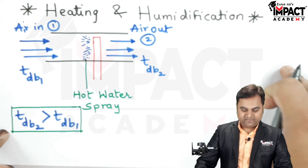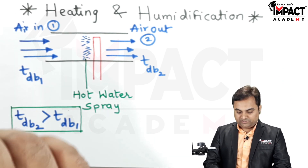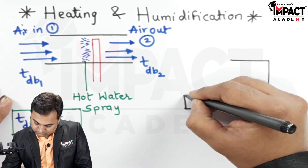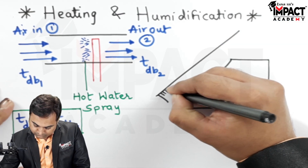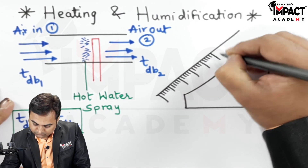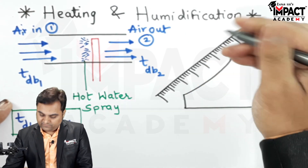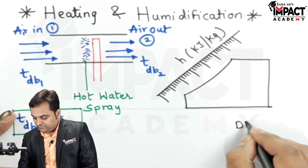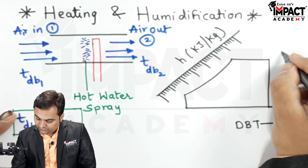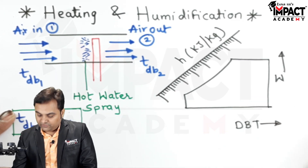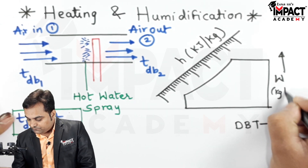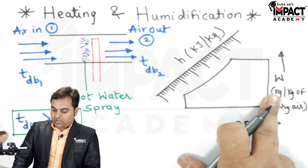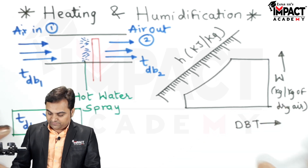I'll now plot this process onto the psychrometric chart. The diagonal scale indicates specific enthalpy in kilojoules per kg, the horizontal axis indicates dry bulb temperature, and the vertical axis indicates specific humidity in kg per kg of dry air — meaning how many kg of moisture or water vapor are present in 1 kg of dry air.